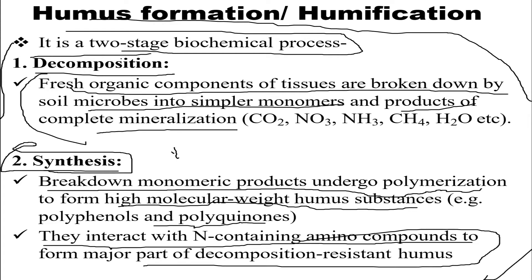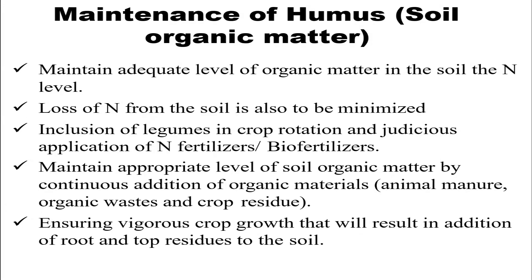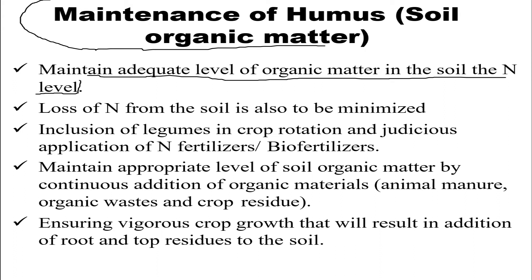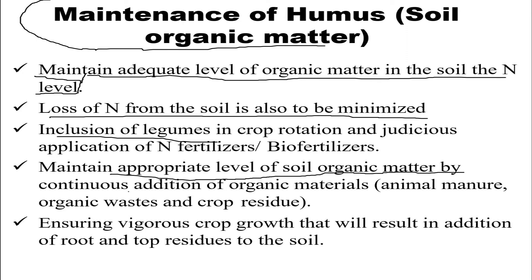Regarding the maintenance of humus, maintaining adequate levels of organic matter in the soil requires keeping the nitrogen content sufficient. Loss of nitrogen from soil should be minimized. Inclusion of legumes in crop rotation and judicious application of nitrogen fertilizers and bio-fertilizers is promoted. Maintaining appropriate levels of soil organic matter through continuous addition of organic material — such as animal manure, organic waste, and crop residue — is also important.